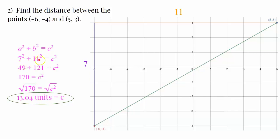7 squared is 49. 11 squared is 121. Add. We get 170 equals c squared. Find the square root of both sides. The square root of 170 is 13.04. And the square root of c squared is c.